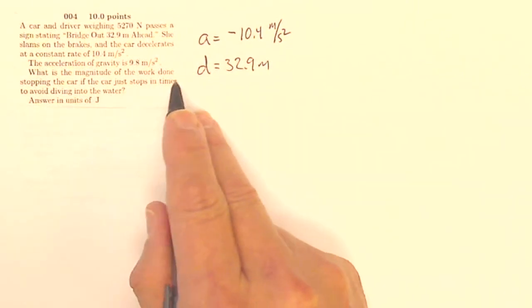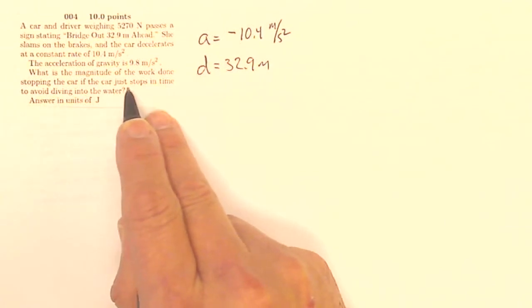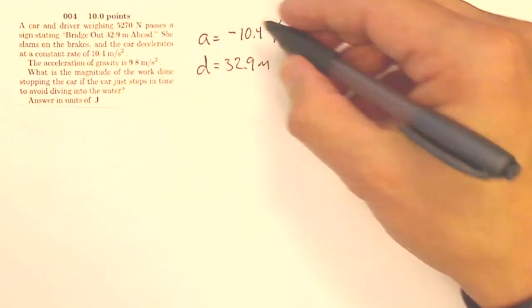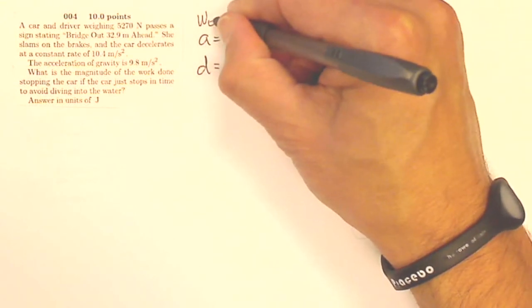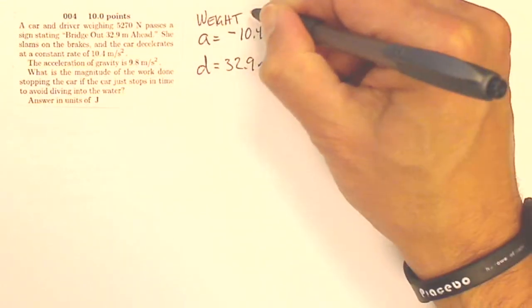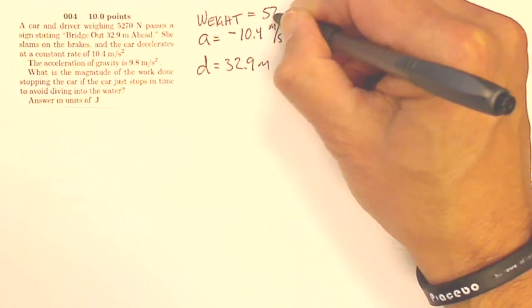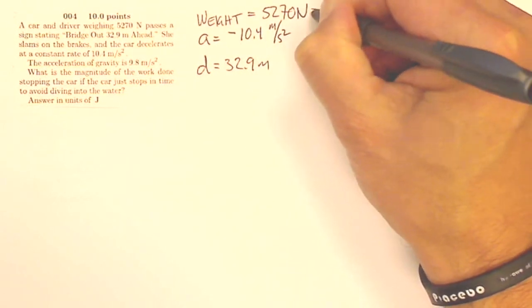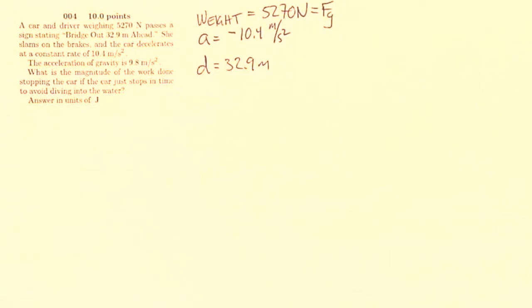What is the magnitude of the work done stopping the car if the car just stops in time to avoid driving into the water? The weight of the car, I don't want to write W because then you might think it's work. The weight of the car is 5270 newtons. That's also the force of gravity on the car.